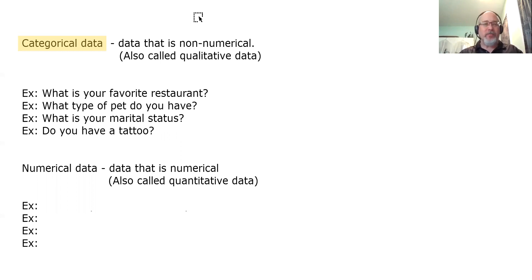Now, by contrast, numerical data is data that is numerical. I hate circular definitions like that, but to contrast it to the definition of categorical data, which is data that is non-numerical, numerical data is also called quantitative data. So if you do take a statistics class, your professor may refer to the two types of data as categorical and numerical, or they may refer to them as qualitative and quantitative.